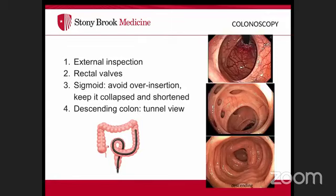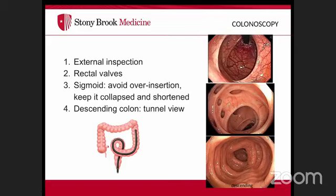The colonoscope is longer and requires more wheel manipulation, especially in the proximal colon. Begin by externally inspecting the anus and perianal area for lesions, then perform a digital rectal exam to rule out anal canal pathology and gently dilate the sphincter. After scope insertion, use small insufflation and identify the three rectal valves.